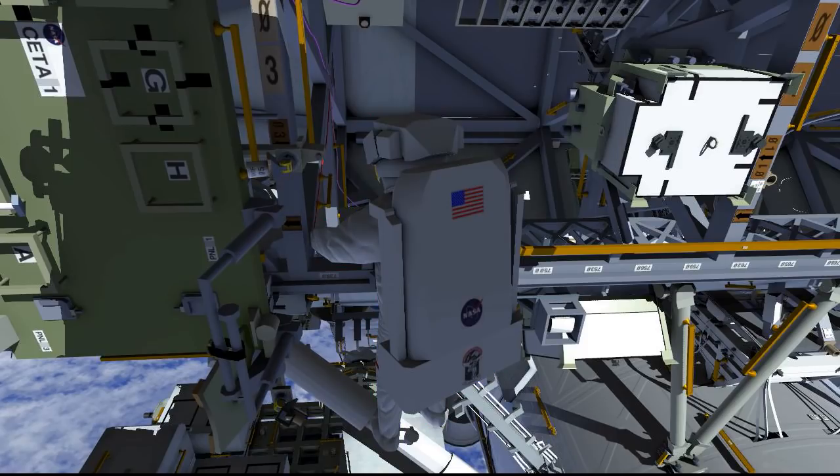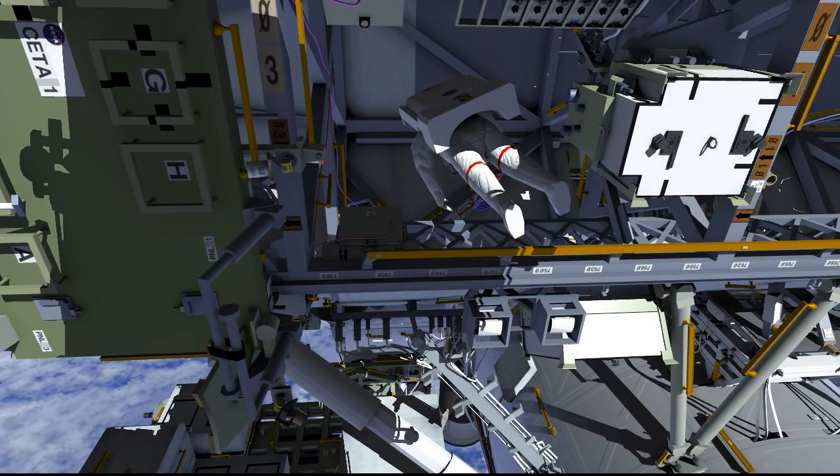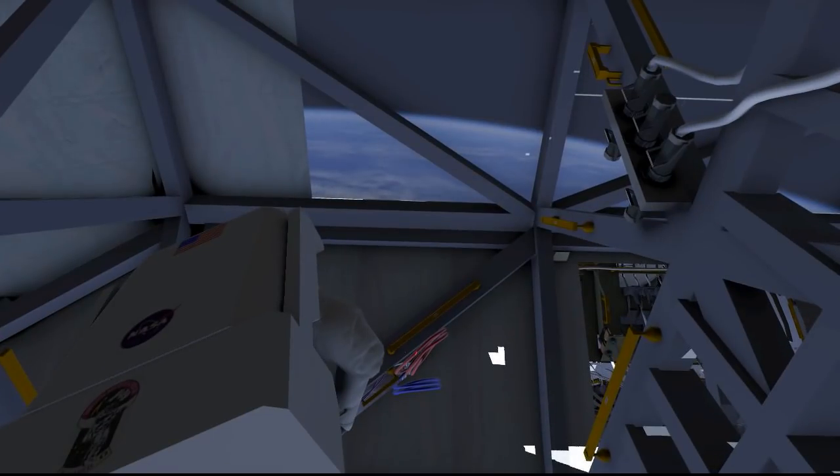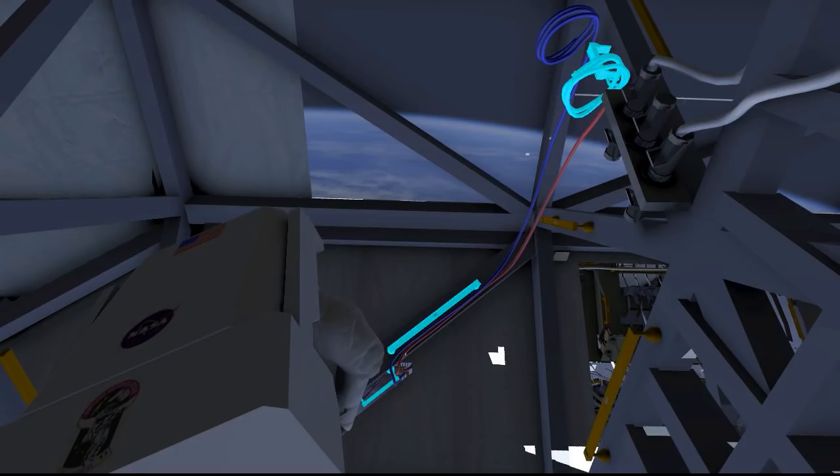EV1 will be heading up to the S0 truss to pick up the cable that EV2 had previously left. This is the one just installed through the MLI on the aft side of the truss. EV1 will enter the bay and continue routing it inside of the truss, separating the blue and red cables. The blue cables will transition to the next bay over to the right, while the red cable will be temp-stowed on a handrail for installation at a future time.